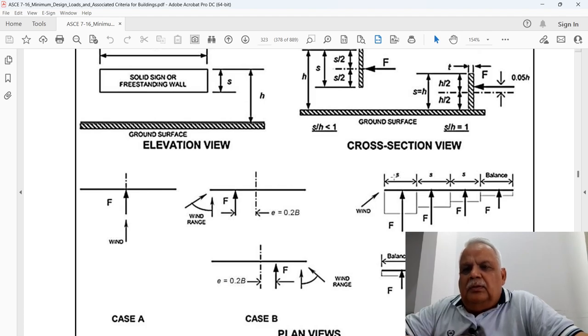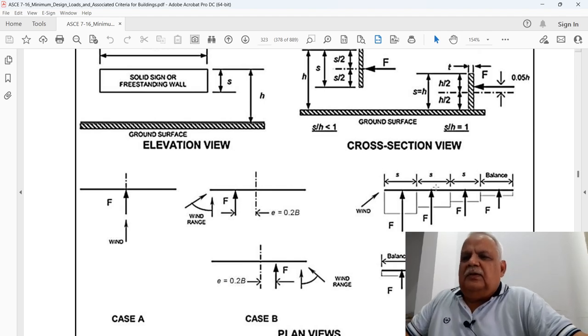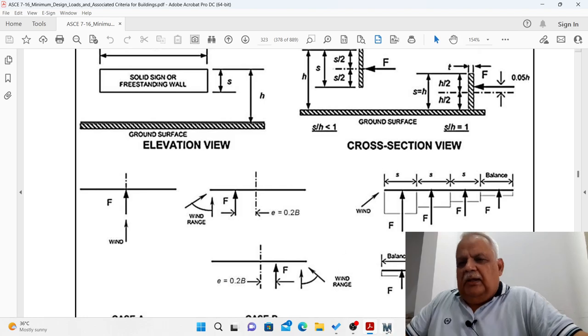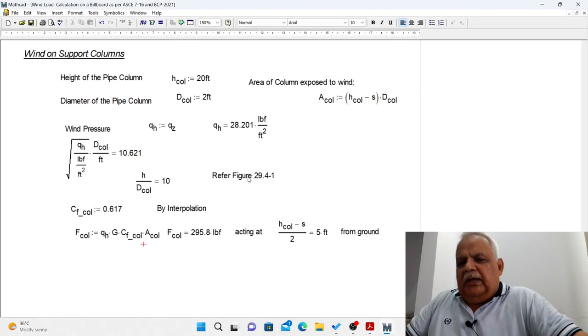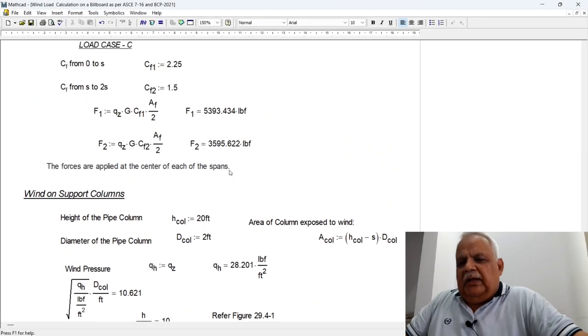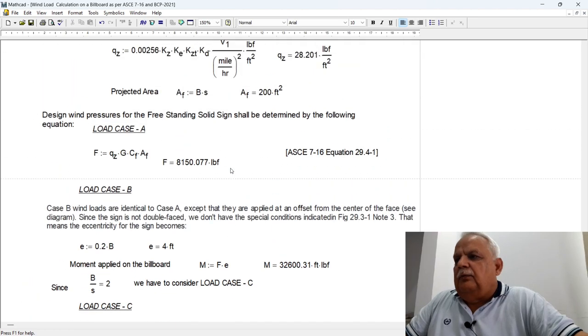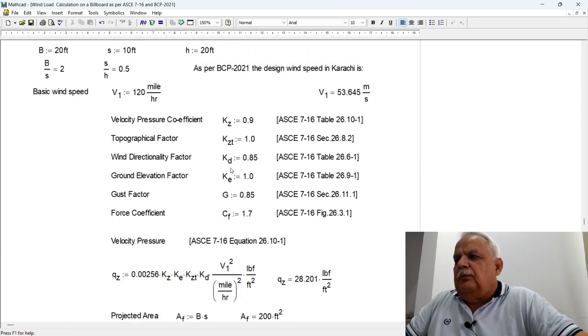Case C is for a very wide billboard where the billboard is wider than 2S. That means this is a very wide billboard. So all these three cases we have to consider. Based on that, I have developed the calculation to show how the wind force should be calculated on the billboard.